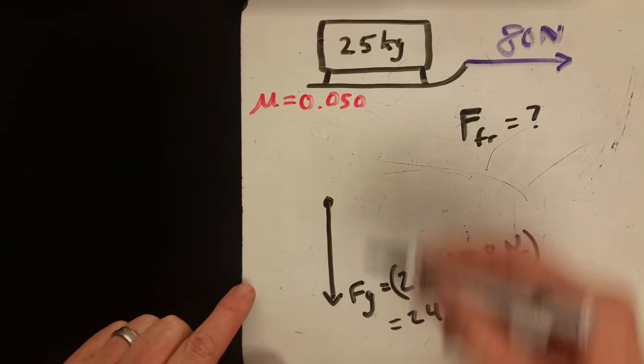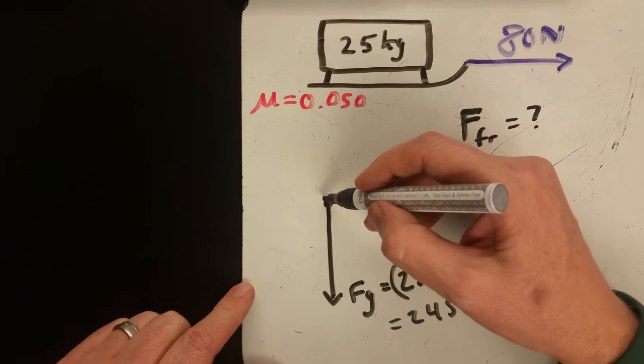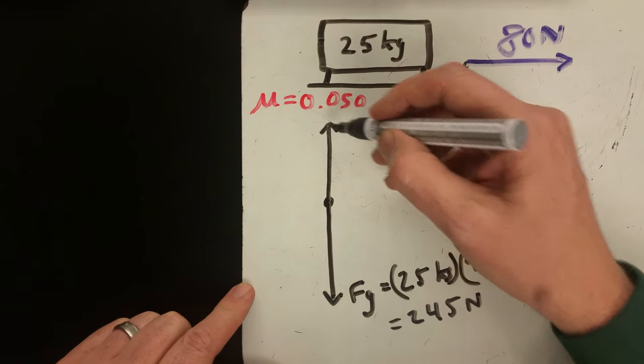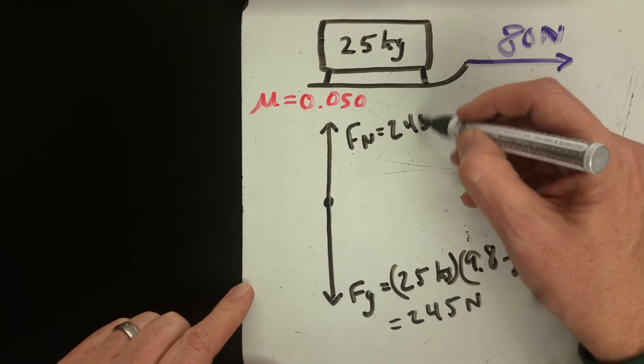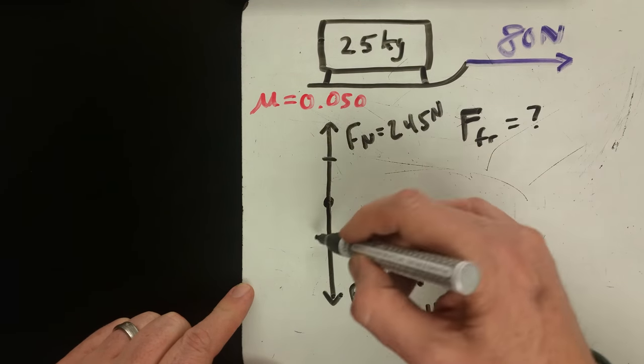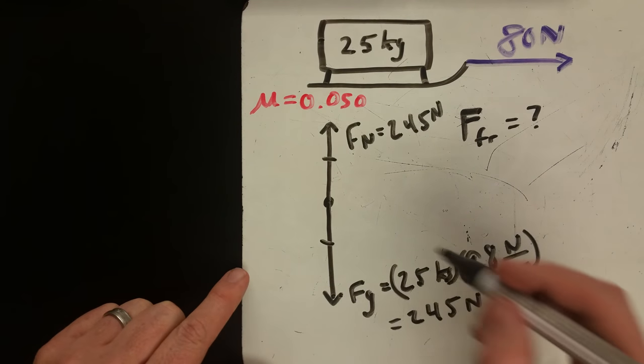We have no other vertical forces, so we know that F normal is equal but opposite.